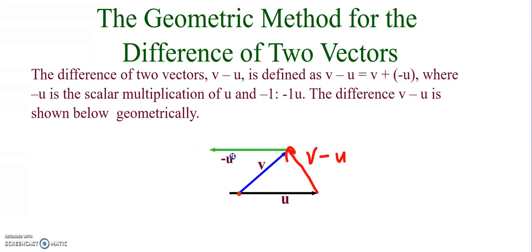If I move the negative u vector up here, because remember vectors don't have a location, they just have a direction and a magnitude. And now if I draw this vector, this vector is also going to be, or this will be actually v plus negative u, which notice is the exact same vector as v minus u.